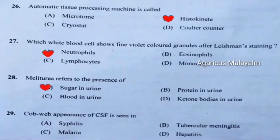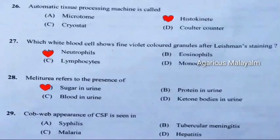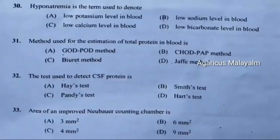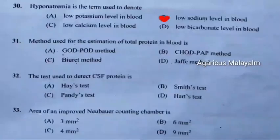Question 28: Mellituria refers to the presence of — correct answer is option A, sugar in urine. Question 29: Cobweb appearance of CSF is seen in — correct answer is option B, tubercular meningitis.